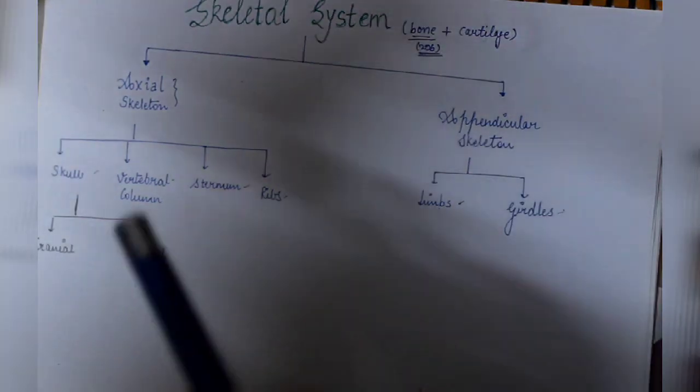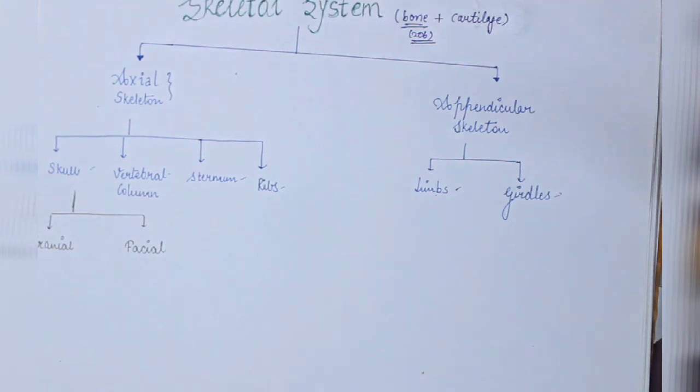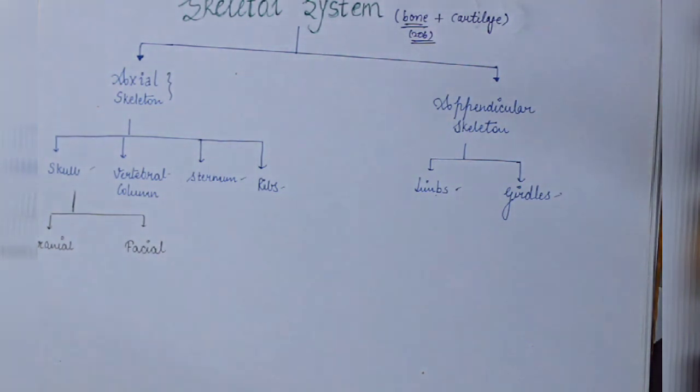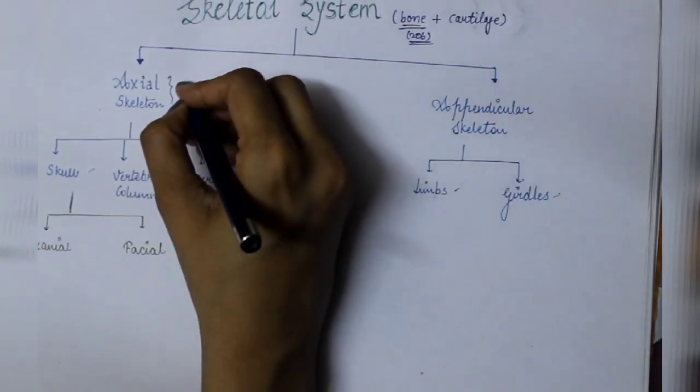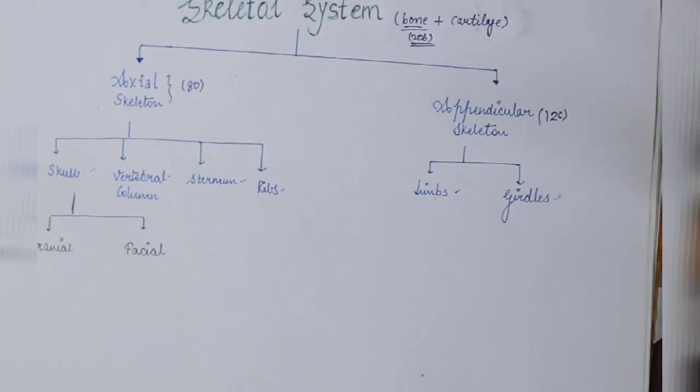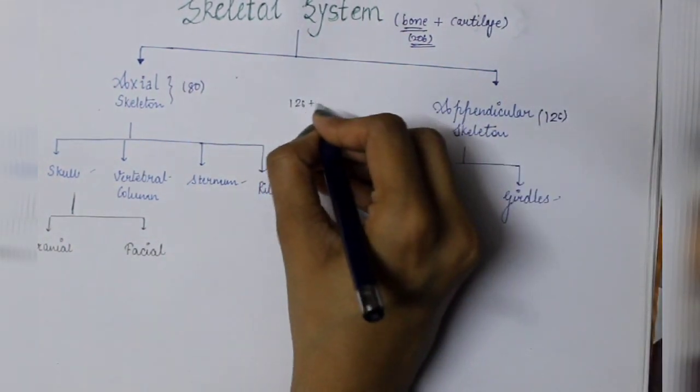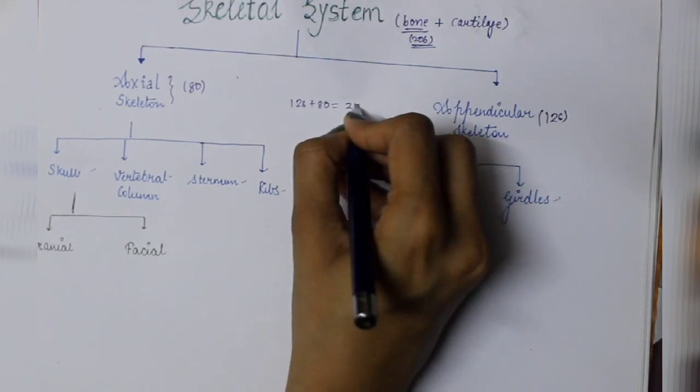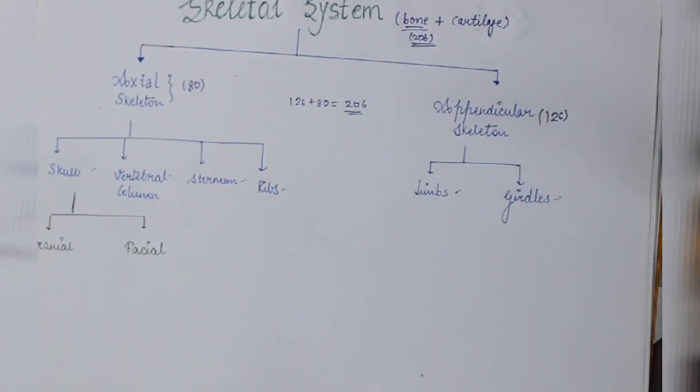While appendicular skeleton consists of all your four limbs, that is hands, legs, and plus girdles which are present here and on the lower region. So these consist of axial skeleton and appendicular skeleton. Basically, in axial skeleton there are 80 bones and in appendicular skeleton there are 126 bones. So 126 plus 80 equals 206 total bones.